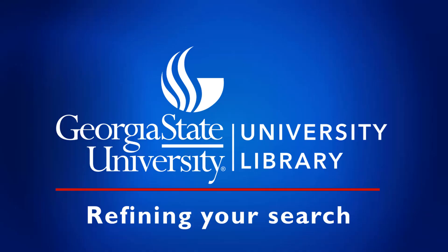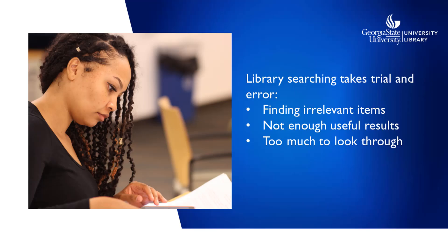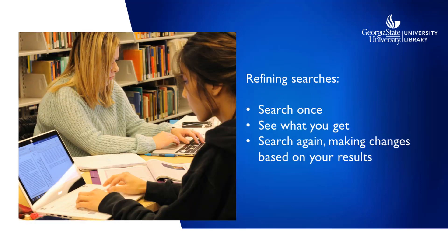You probably won't find everything you're looking for with your first try at searching. You'll often get a lot of irrelevant results, not enough sources, or maybe too many sources to comb through to find what you actually need. We call it re-search for a reason. Library research is a process — there's some trial and error involved, but the most effective way to improve your search results is to refine them by trying again based on what you learned from your first searches.